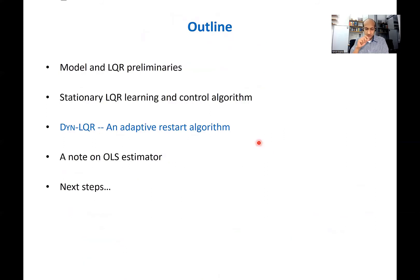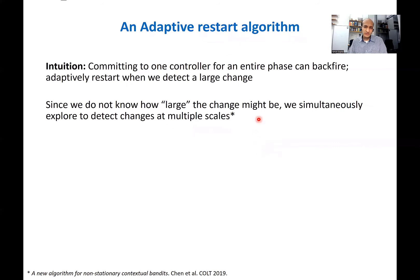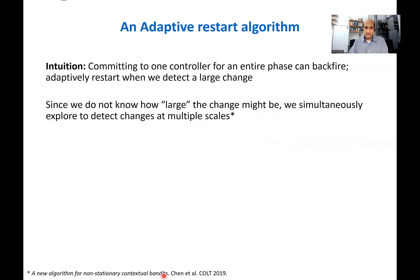Let me give one algorithmic nugget for converting the stationary algorithm into one for the dynamic LQR problem. In the stationary problem, we fix a controller for an entire phase of geometric length. In the non-stationary LQR problem, that's a bad idea: dynamics could change by a large amount mid-phase, causing large regret for that entire phase. The right algorithm should adaptively detect if a large change has happened and restart learning. Since we don't know what a large change might be, we borrow a technique introduced for the contextual bandit problem by Chen et al., which detects non-stationarity at multiple timescales.